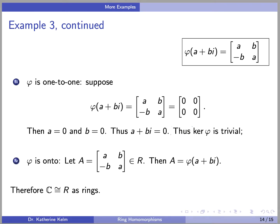In addition, phi is one-to-one: if phi(A + Bi) equals the zero matrix, then A = 0 and B = 0, so the kernel is trivial. And finally, phi is onto because every matrix in R is of the form [A, B; −B, A], which is clearly equal to phi(A + Bi). Therefore, C is isomorphic to R as rings.